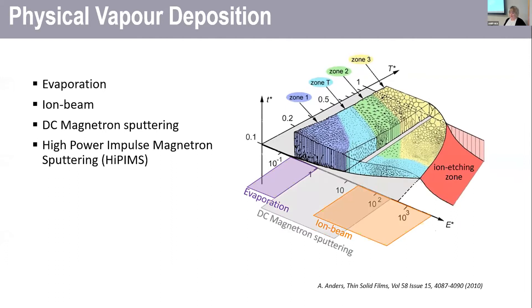DC magnetron sputtering is a very popular technique, it scales up very well. So it's very good for commercial applications. It's quite reliable, it's got a good deposition rate. But there still is a limit on the energy range.